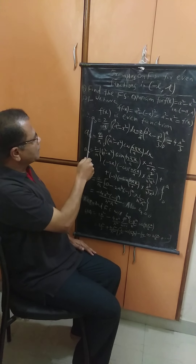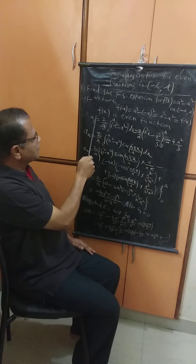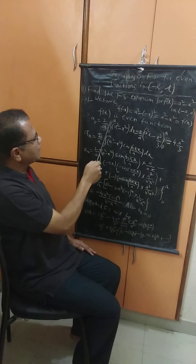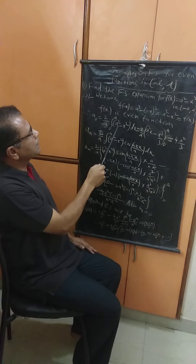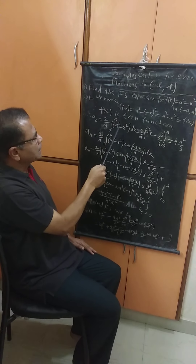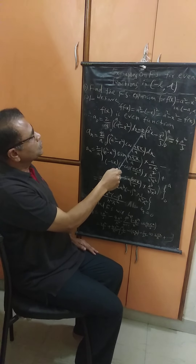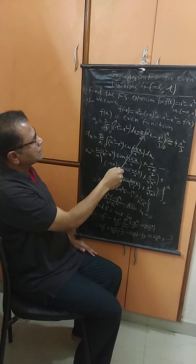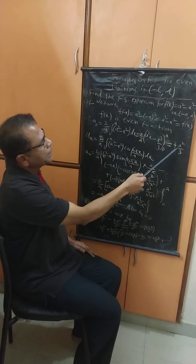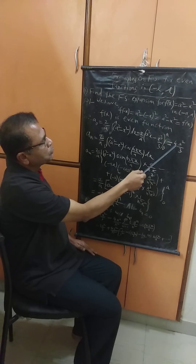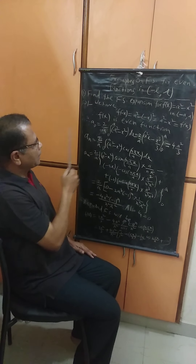What is a0? For even functions, a0 is (2/a) times the integral from 0 to a of (a² - x²) dx. After evaluation of this integral, we obtain 4a²/3 as the value of a0.